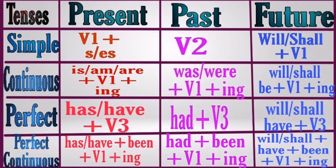The first rule: in simple present tense, we use V1 (plus S or ES). V1 is the base form of the verb. For example: sing (V1), sang (V2), sung (V3); drink (V1), drank (V2), drunk (V3). S or ES is used with the third person singular. The second rule: in present continuous tense, we use 'is/am/are' plus V1 plus '-ing.' Always remember, whenever there is continuous tense, you must use the '-ing' form.